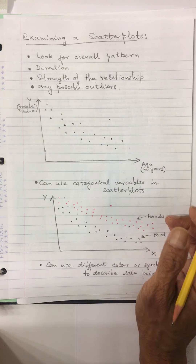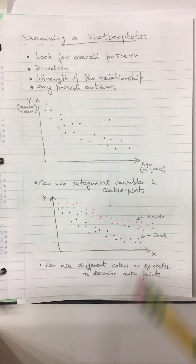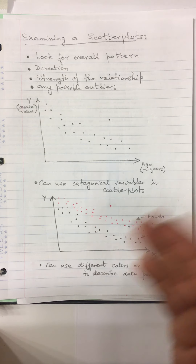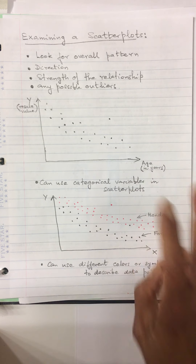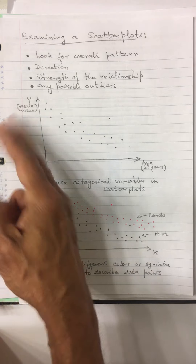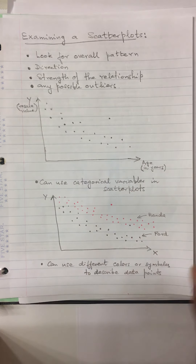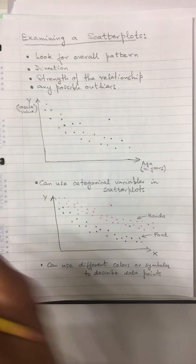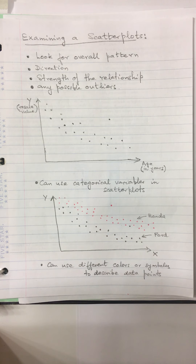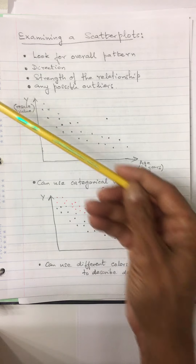This is a continuation of the previous video, so you already know scatter plots. When you look at a scatter plot, you put the response variable on the y-axis and the predictor variable on the x-axis. For example, using resale values and the age of vehicles, you have a downward trend. When examining a scatter plot, you look for the overall pattern — whether you have a downward trend or an upward trend. That's the direction.